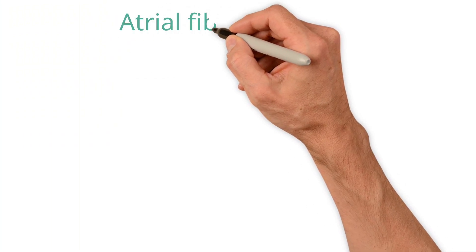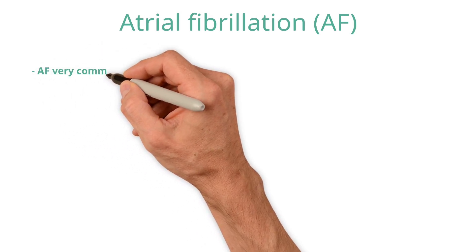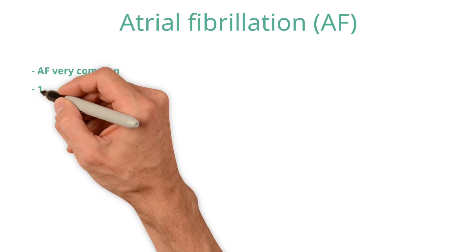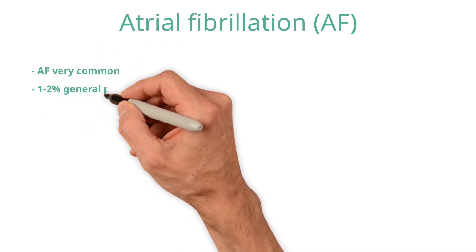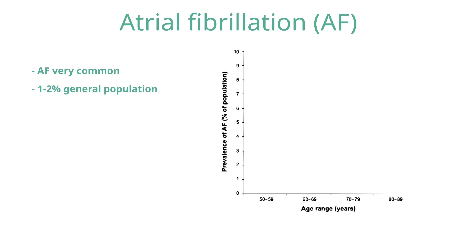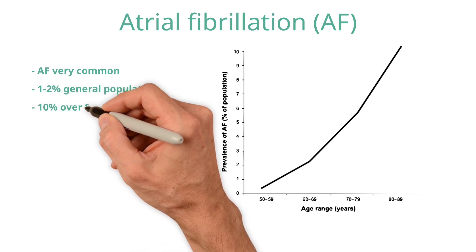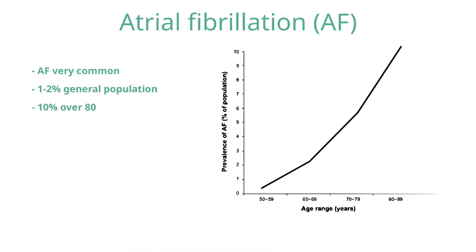Atrial fibrillation, usually just abbreviated to AF, is the commonest sustained heart rhythm disorder, affecting around 1-2% of the general population. Its incidence increases with age, such that the risk of developing AF doubles with each passing decade. It is thought to affect around 10% of those over the age of 80 years.